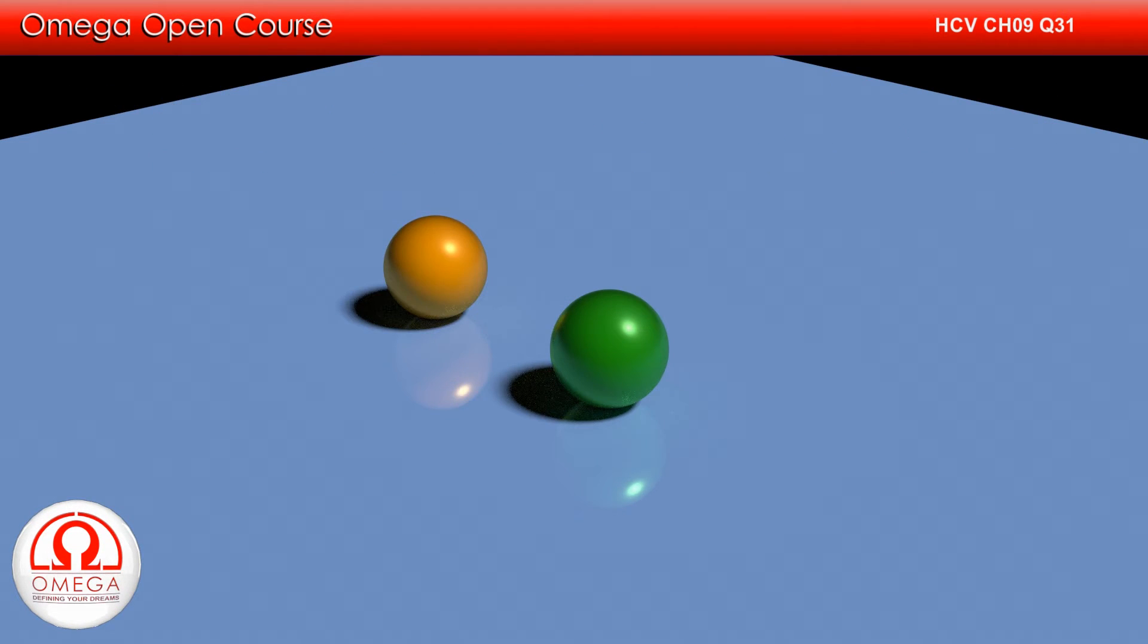Let us denote the mass of the 0.5 kg ball by m1, the 1 kg ball by m2, velocity of the 0.5 kg ball by v1, and velocity of the 1 kg ball by v2 in directions shown.